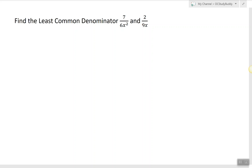In this video I will show how to find the least common denominator of two rational expressions. To find the least common denominator means to find the least common multiple of both denominators. To do that we have to factor both denominators completely.